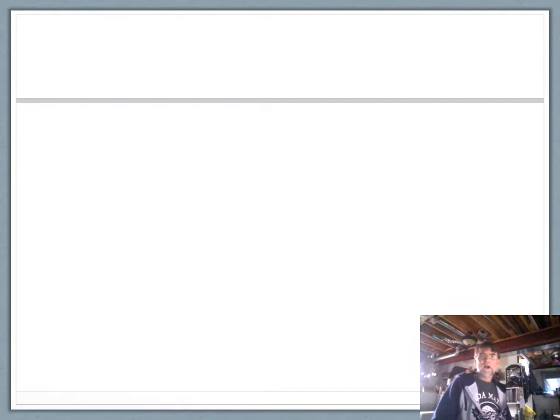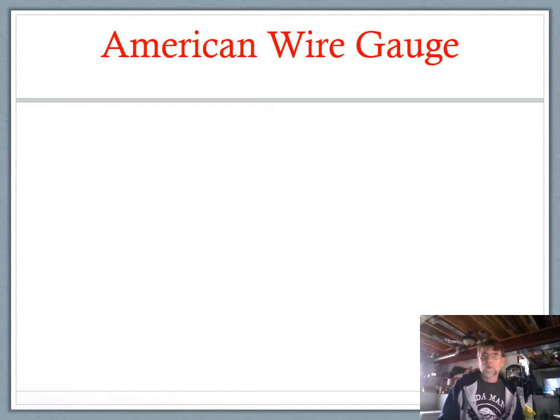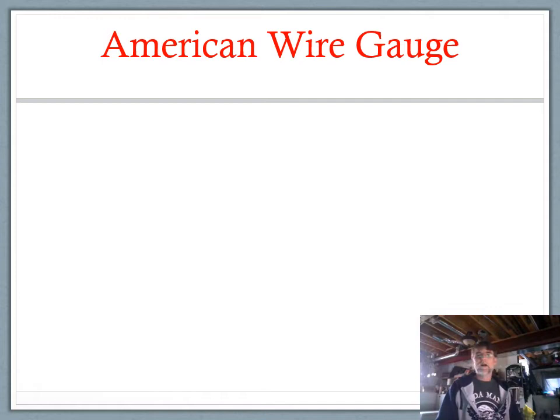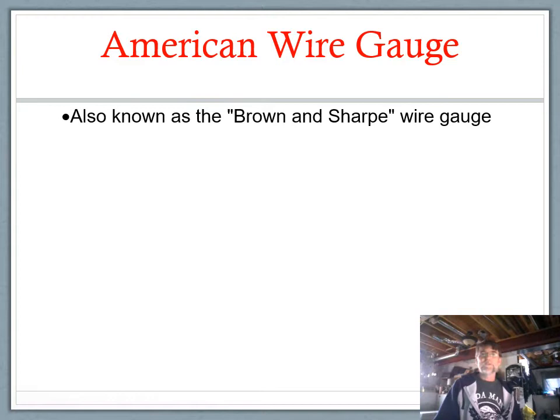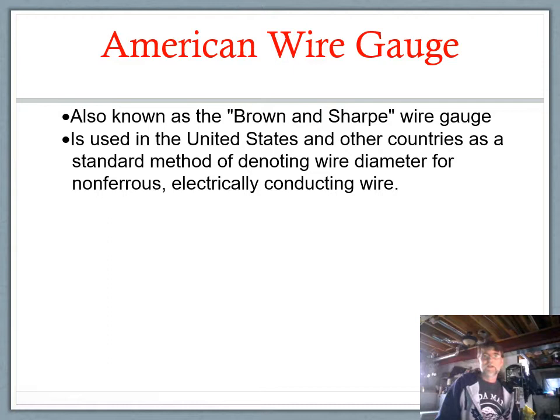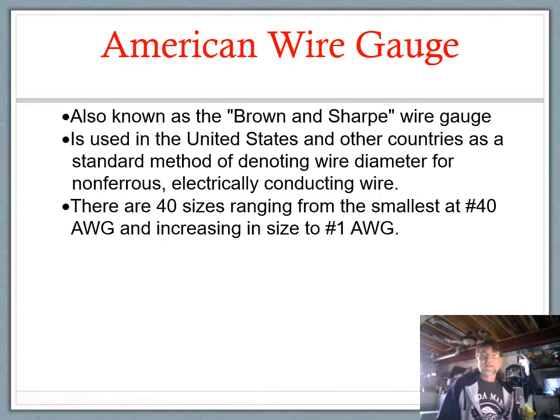No conversation about conductor sizing would be complete without talking about the American Wire Gauge — AWG. The American Wire Gauge is how we express the size of a conductor. I already listed diameter, square mil area, and circular mil area, but in normal everyday conversations we don't use those values — we use the American Wire Gauge, also known as the Brown and Sharpe wire gauge, though I've never heard anyone refer to it as that. It's used in the United States and other countries.